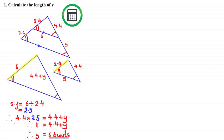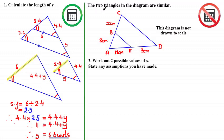I hope you all got that. Let's have a go at the next past paper question. The two triangles in the diagram are similar — work out two possible values of X and state any assumptions you have made. I'll give you a few seconds to pause the video to have a go, and when you come back we'll look at the solution.